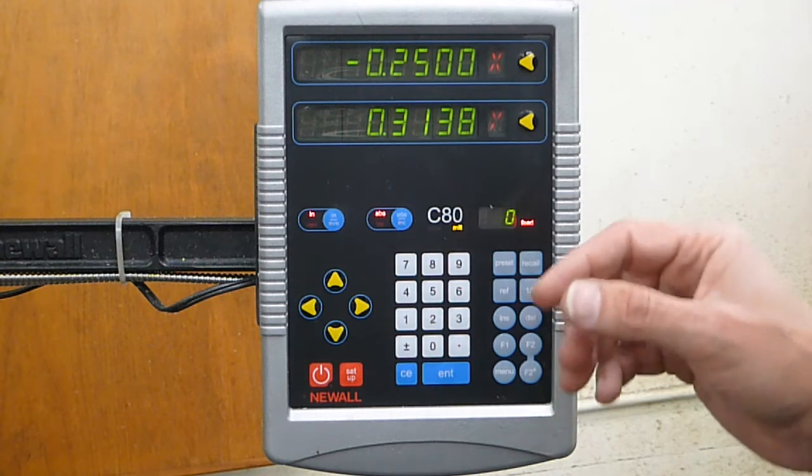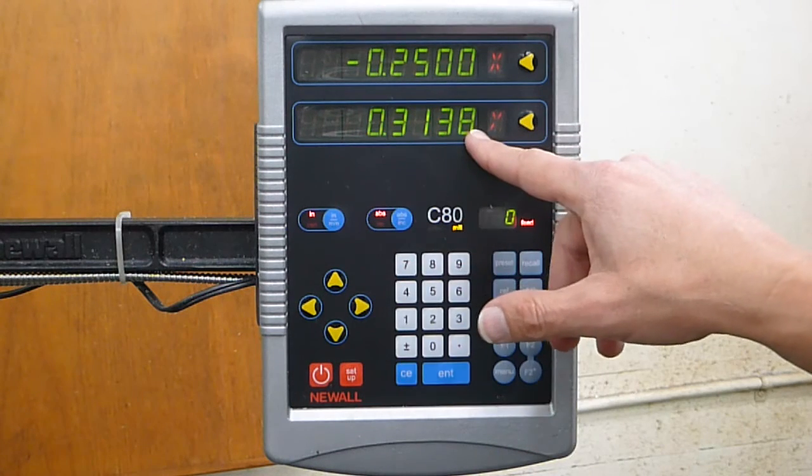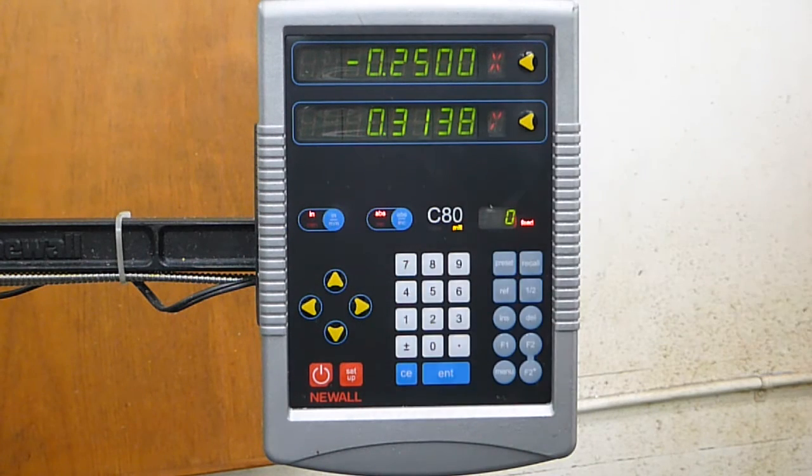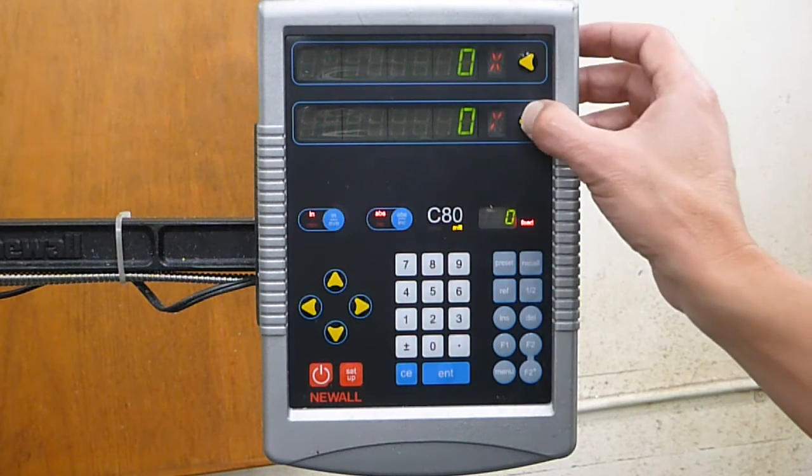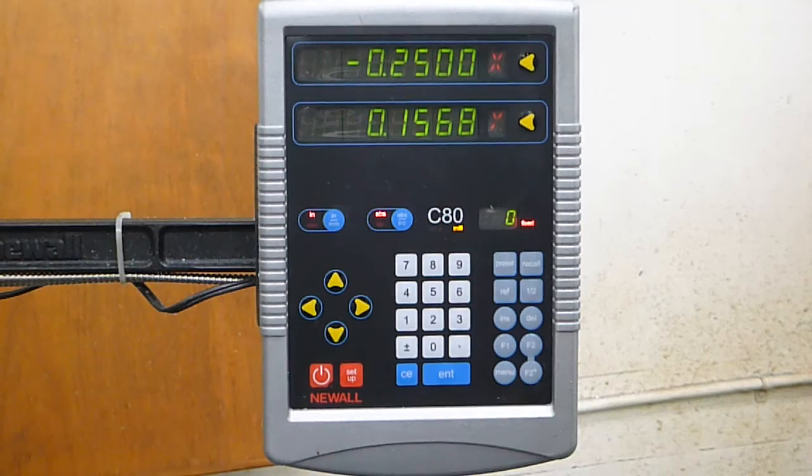There are several times that you might want to divide a number in half. Instead of pulling out your calculator and dividing that in half, all we have to do is hit the one-half key, select the axis, and it divides it in half for us.